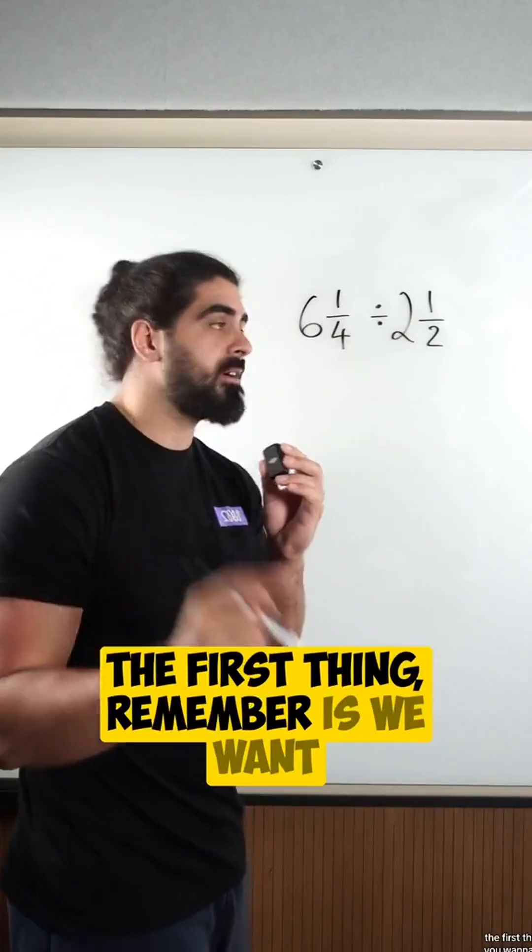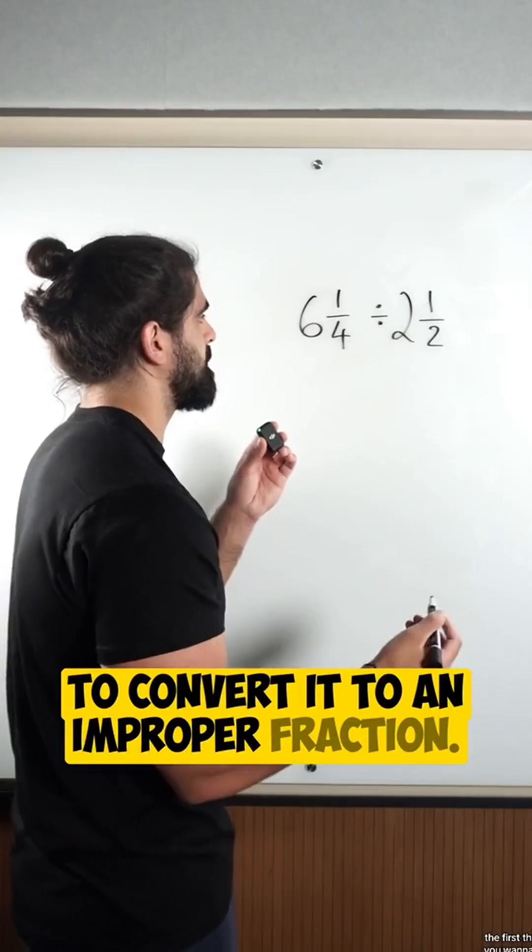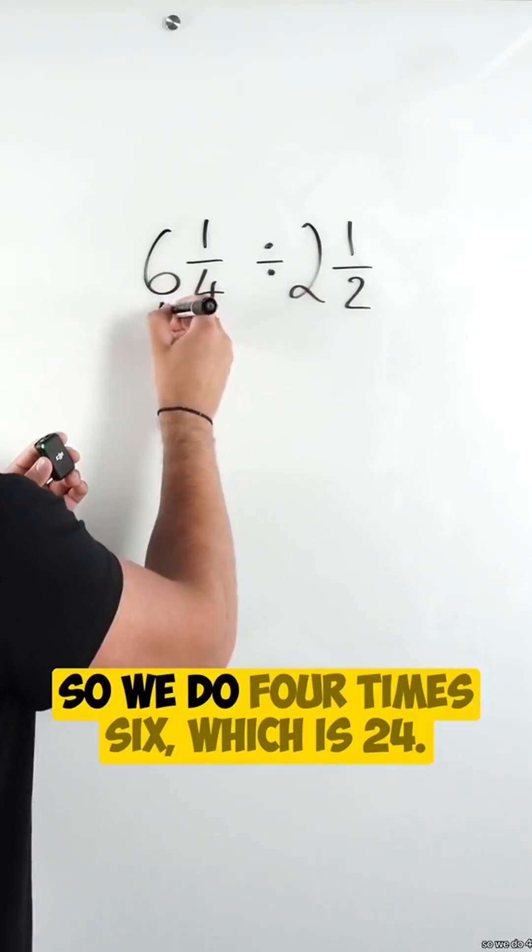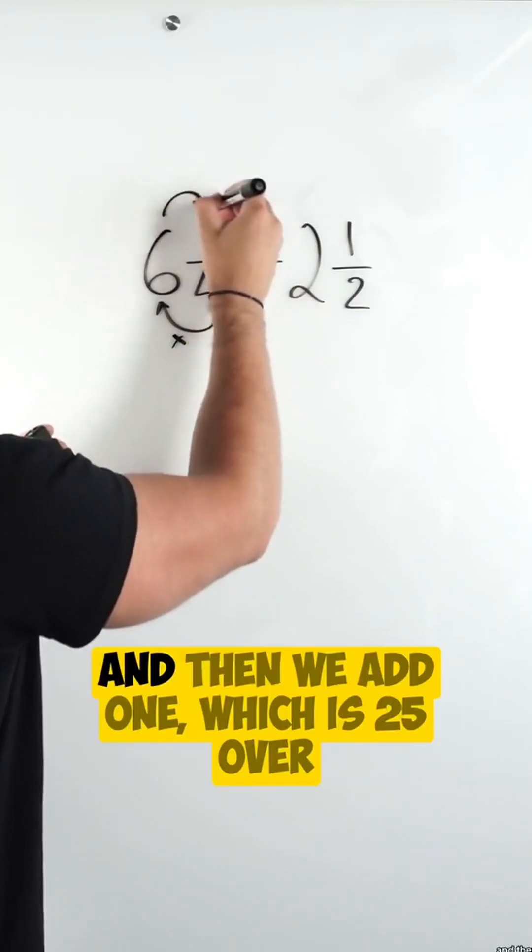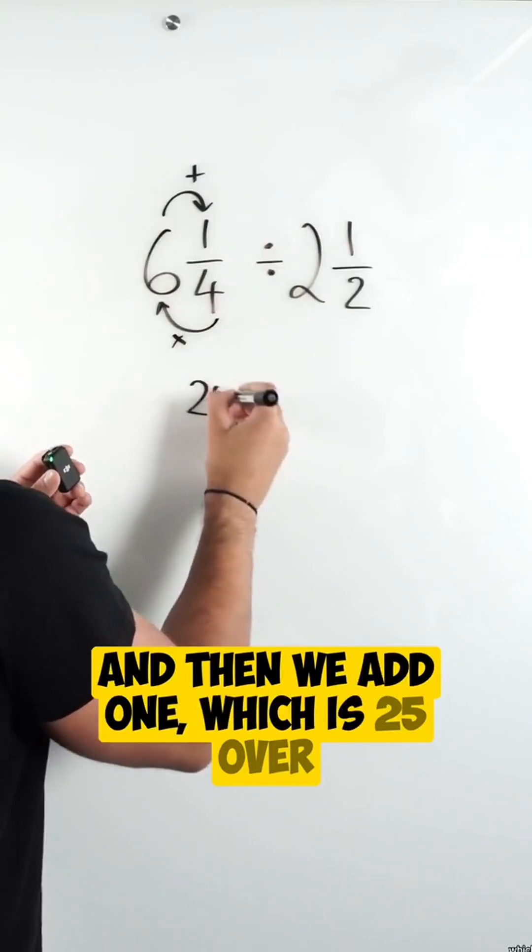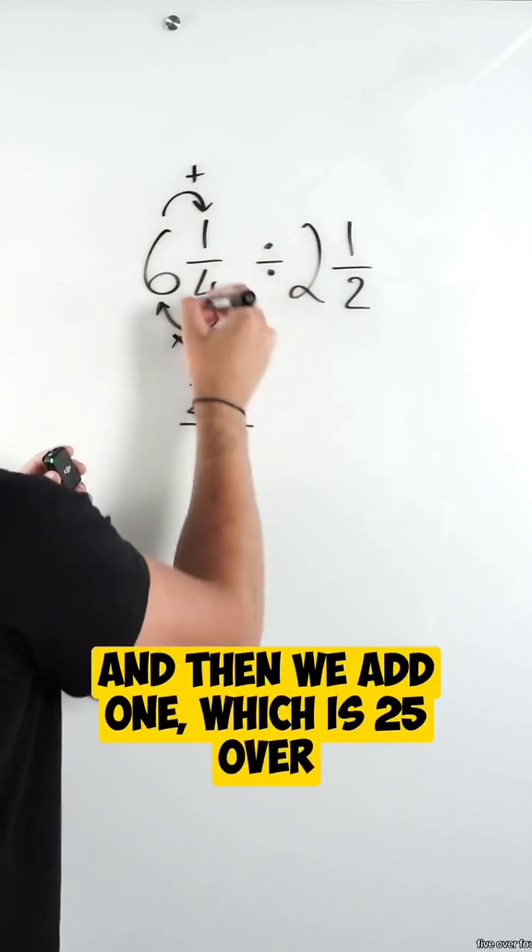The first thing, remember, is you want to convert it to an improper fraction. So we do four times six, which is 24, and then we add one, which is 25 over four.